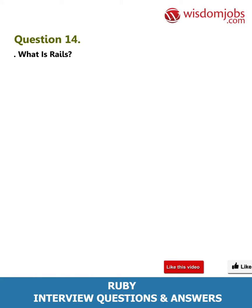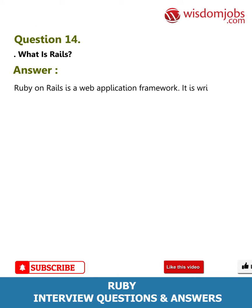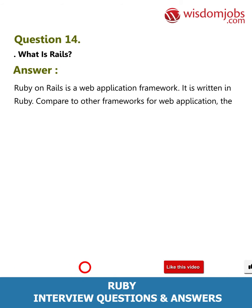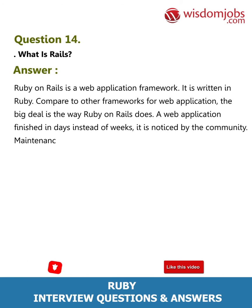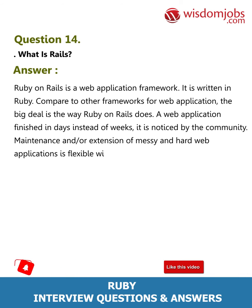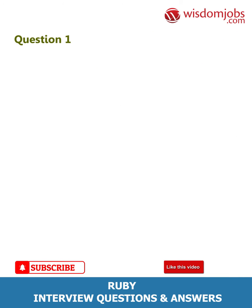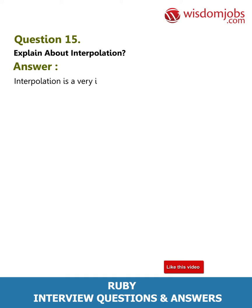Question 14: What is Rails? Answer: Ruby on Rails is a web application framework written in Ruby. Compared to other web application frameworks, the big deal is the way Ruby on Rails gets a web application finished in days instead of weeks. Maintenance and extension of complex and hard web applications is flexible with Ruby on Rails.